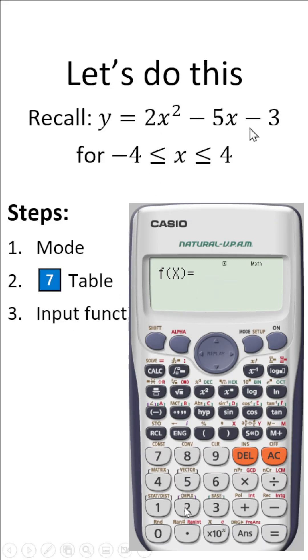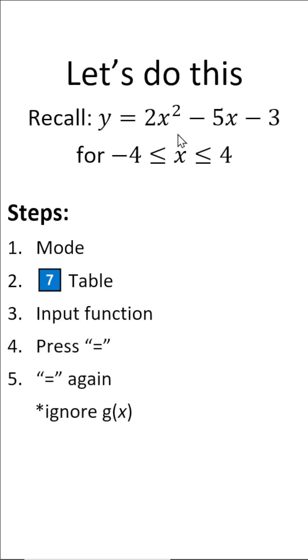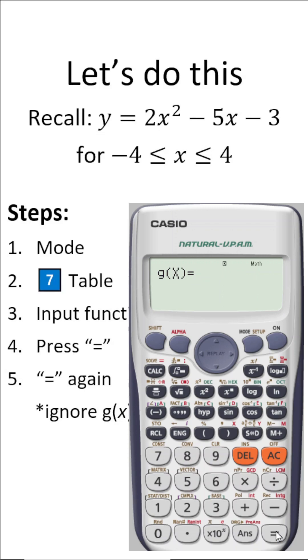Follow exactly. We have 2x alphabet bracket to get x, followed by a square, minus 5 alphabet x minus 3. Press equal. Simply ignore the function cheese. Since we have only one function here, press again equal.